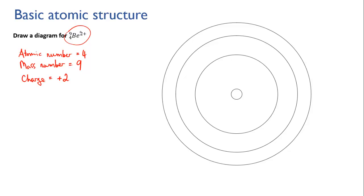When you write the charge in an atom or ion symbol like this, the convention is to put the number first and the symbol afterwards — so 2+. But when you're referring to the charge normally, you would usually say plus 2, or minus 3, or whatever it is. So let's work out how many protons, neutrons, and electrons we've got.